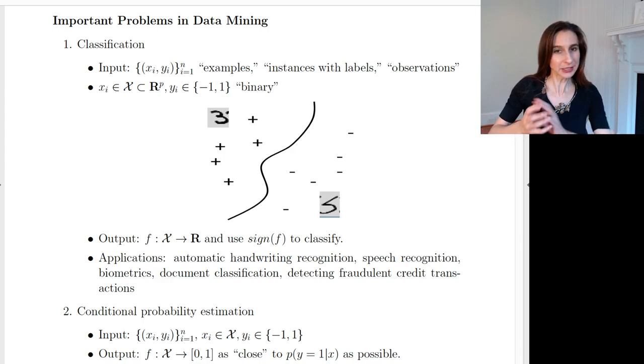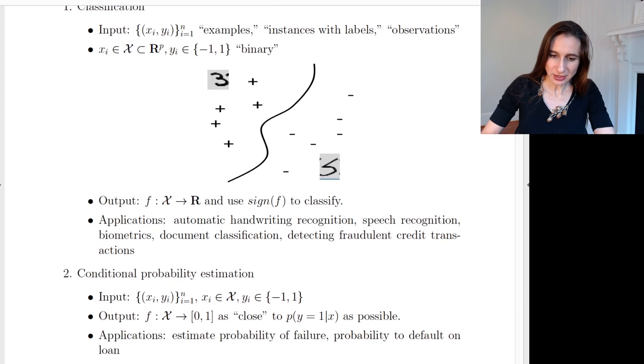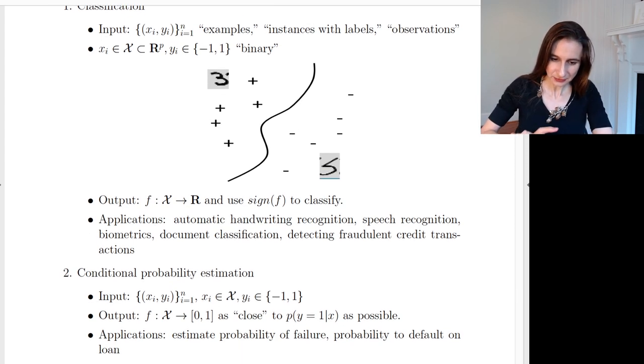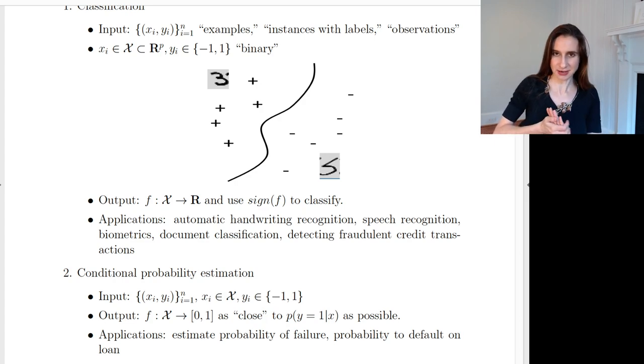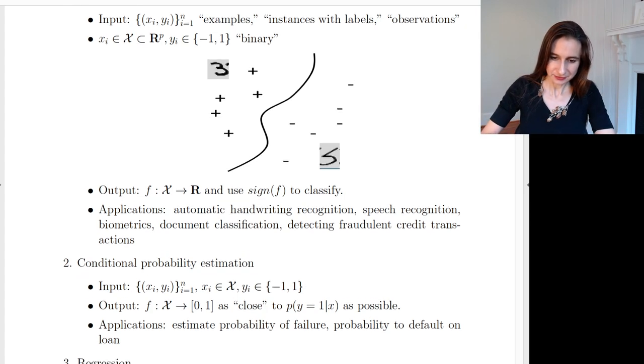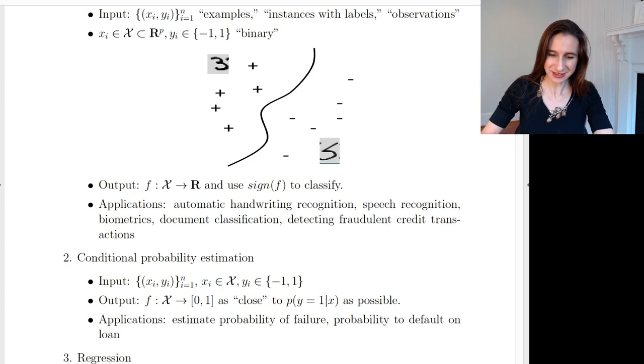For binary classification, the labels are plus one and minus one. You can have variations where you can have multiple labels as the outcome. Your goal is to take these data, and in the high dimensional space in which they live, you want to create a classifier which is a function that separates the positives from the negatives. The decision boundary is where that function is zero. You're going to use the sign of that function to make the classification.